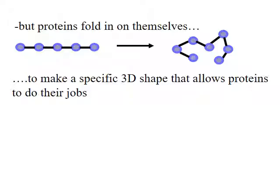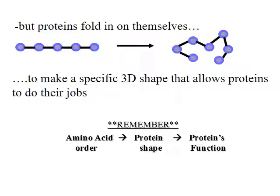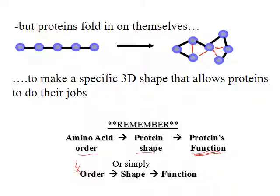Because proteins fold in on themselves and make a unique 3D structure, it allows them to have very specific jobs. The order of the amino acids is important — the order determines how they will fold and where chemical bridges form. So the order determines the protein's shape, and the shape of the protein determines what job it can do and whether it can do that job appropriately. Order determines shape; shape determines function.